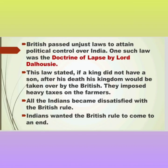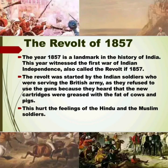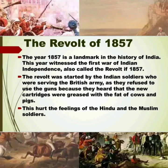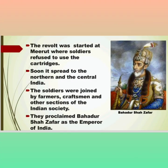Indians wanted the British rule to come to an end. The year 1857 is a landmark in the history of India. This year witnessed the first war of Indian independence, also called the Revolt of 1857. The revolt was started by Indian soldiers serving in the British army, as they refused to use the new cartridges, which they heard were greased with the fat of cows and pigs. This hurt the feelings of the Hindu and Muslim soldiers. The revolt started at Meerut, where soldiers refused to use the cartridges.